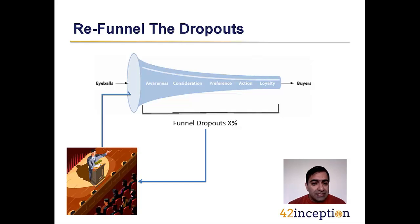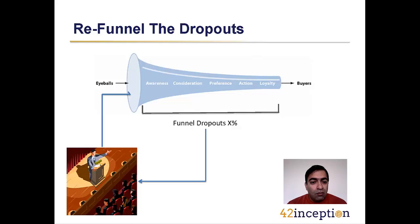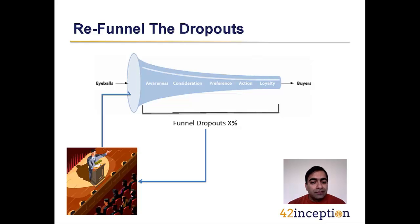Is there a way through which you can get these dropouts back into the funnel? Audience aggregation is a method to do that. All the people who are dropping out — you can get them aggregated somewhere and continue to deliver a message such that they mature in their buying process, and at the right time they will actually come back into the marketing funnel.